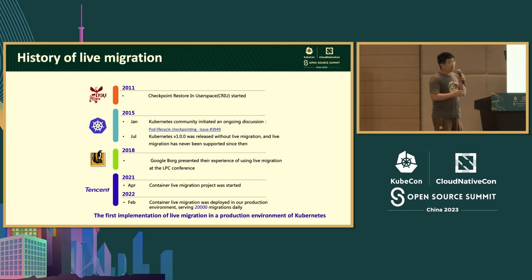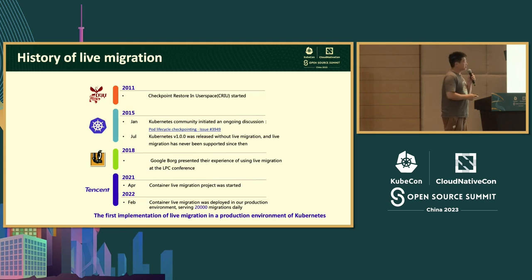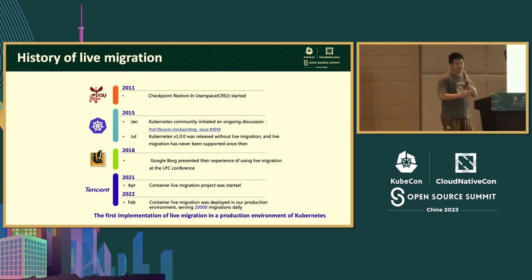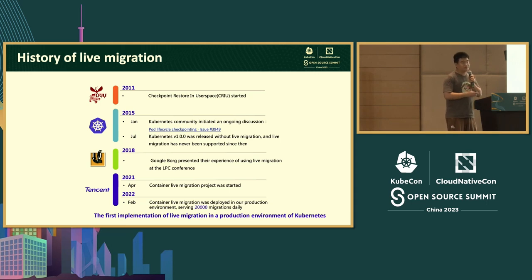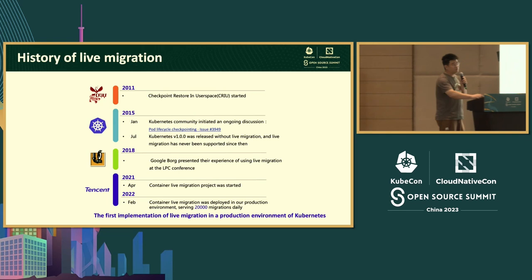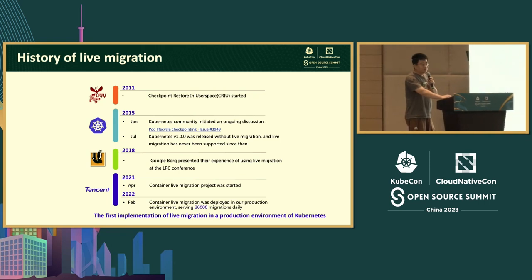But for the full power of live migration, CRIU alone is not enough. So from 2015, before the release of K8S 1.0, the K8S community started a discussion about whether K8S would support live migration. Since live migration touches many areas and the problems are complicated, that issue is still open today and the community has never provided live migration support. The roadmap is not even clear.